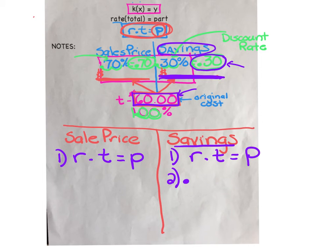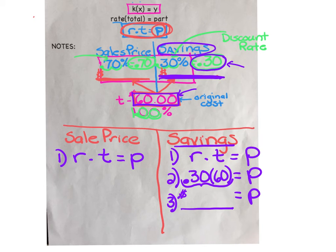Our rate is 0.30 and we're going to multiply that times 60, our total. Grab your calculator and quickly punch in 0.30 times 60. You should have gotten 18 dollars. You get to save 18 dollars.